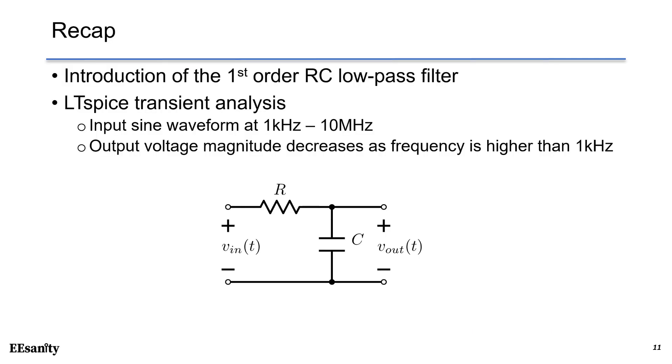Here's the recap. This lecture talks about the first-order RC low-pass filter. We did some transient simulation results using different sinusoidal waveforms at 1 kHz all the way up to 10 MHz. We noticed that the output voltage magnitude decreases as frequency is above 1 kHz.